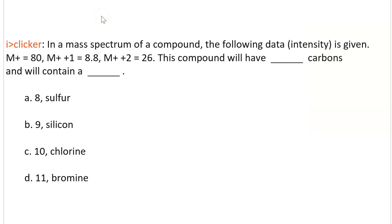Here's an exercise for you to try. We got a molecular ion peak at 80 and an M plus 1 peak with an intensity of 8.8, and then the M plus 2 peak has an intensity of 26. How many carbons are there, and what heteroatom does the molecule contain? Go ahead and pause your video and work it out now.